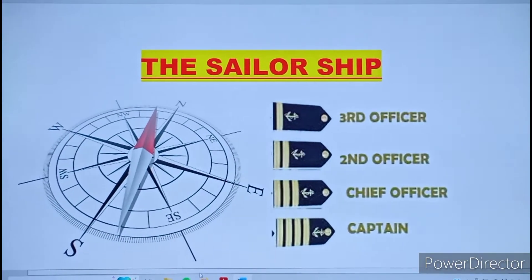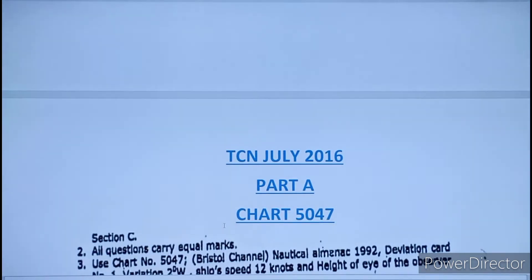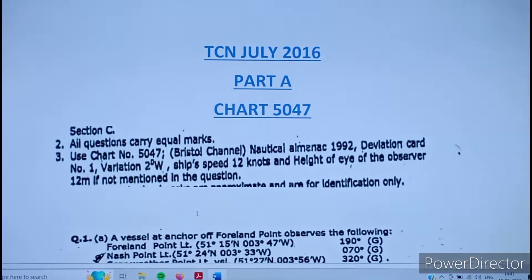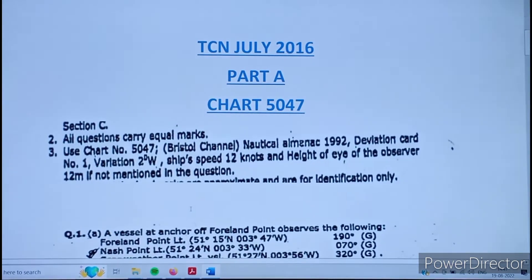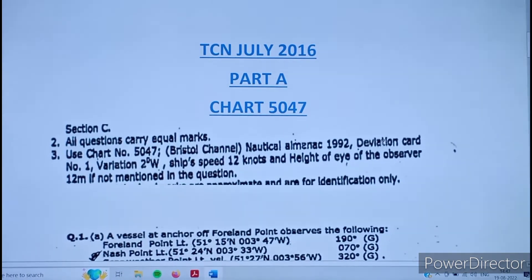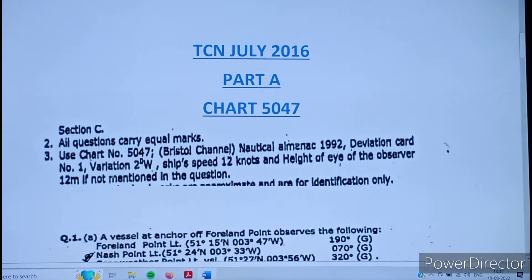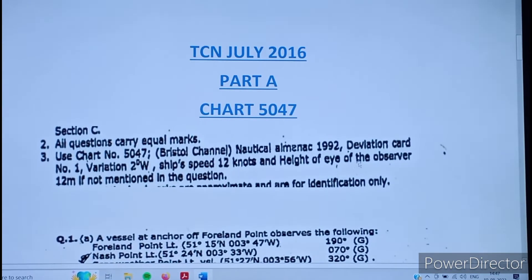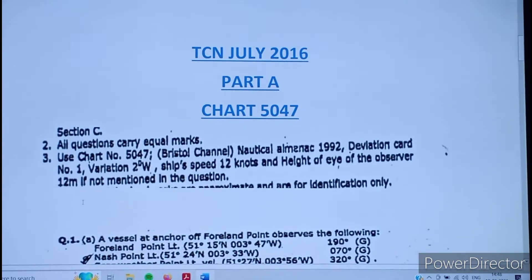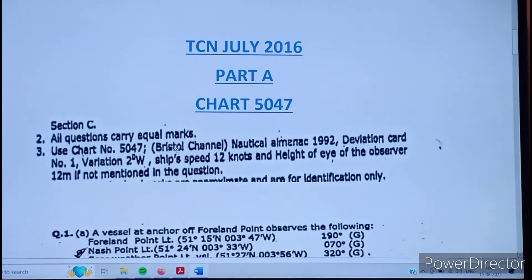Hello friends, welcome to the Shiver Sib. Today we are going to discuss the Navigation July 2016 paper, Part A only. We have some instructions on the top of the question paper: US chart 5047, Nautical Almanac 1992, Deviation Card No. 1, variation 2 degrees west, ship speed 12 knots, and height of eye 12 metres — to be used if not mentioned in the question.